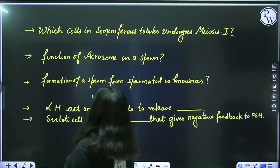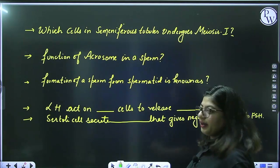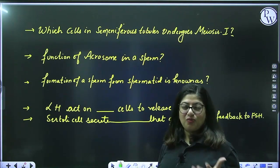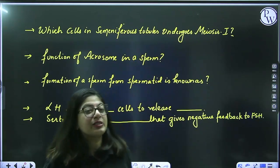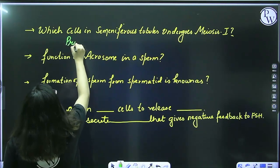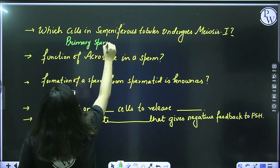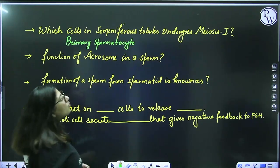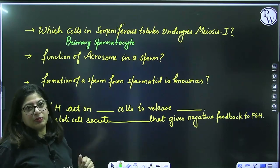First question: which cells in seminiferous tubules undergo meiosis I? The seminiferous tubule is part of the testes and produces sperms. During spermatogenesis, the primary spermatocyte undergoes meiosis I to form secondary spermatocyte. Then secondary spermatocyte undergoes meiosis II to form spermatid, and then spermatid forms sperms.